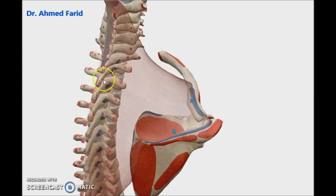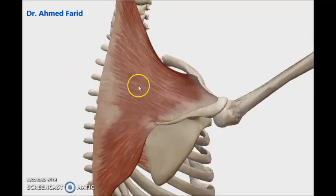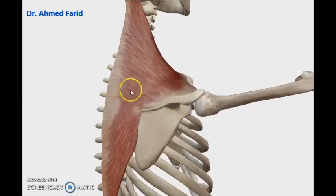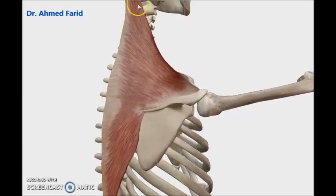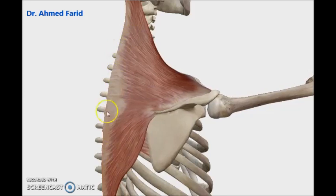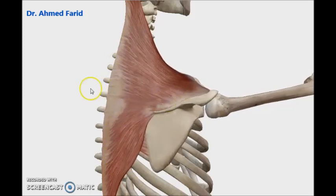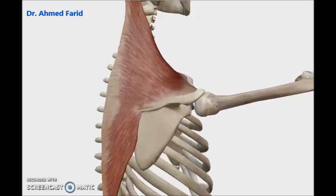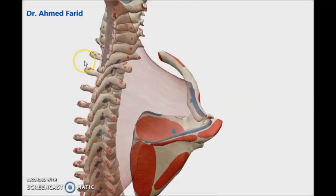What about the whole muscle or the middle fibers, which are horizontal? The action will be retraction of the scapula. This is very clear in this video — the middle fibers only act, or if the whole muscle acts together, the result will be retraction of the scapula, meaning posterior movement of the scapula.